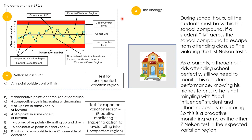In slide two, I'd like to share the components of SPC. There is a special cause region (unexpected variation region) shown in red — this is beyond the UCL (upper control limit) and below the LCL (lower control limit). The yellow zone is the common cause region (expected variation), which is between UCL and LCL. SPC calculates the center line (average of collected data), and the UCL and LCL are three standard deviations away from the center line.